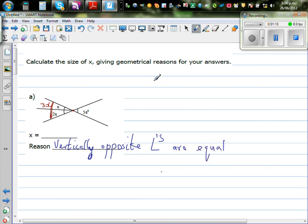So based on that, I can say 3X, which is one angle of the vertically opposite angles, is equal to 54. So dividing both sides by 3, X is 54 divided by 3.